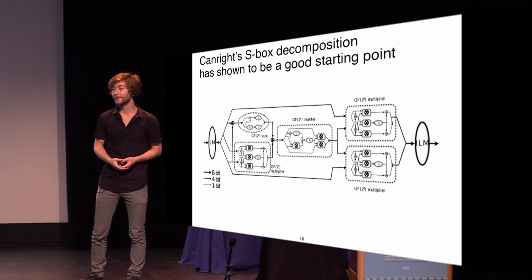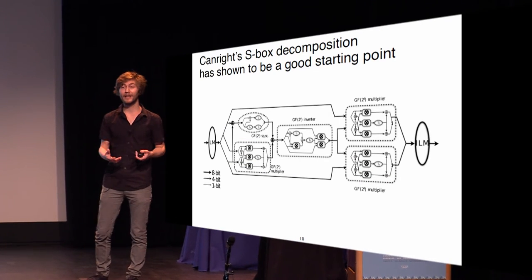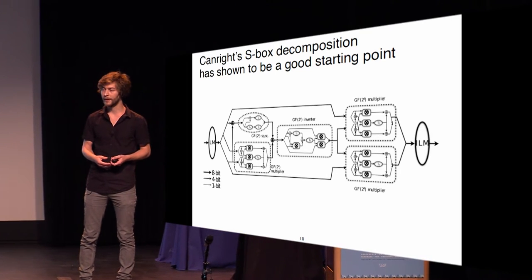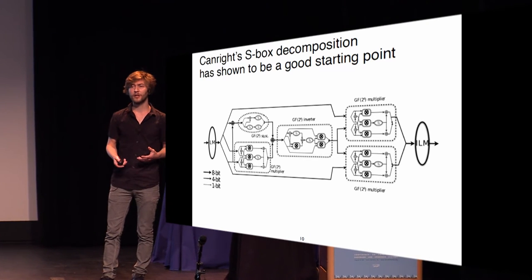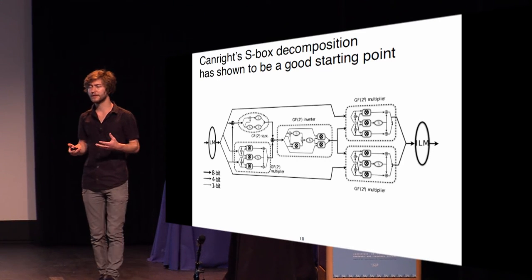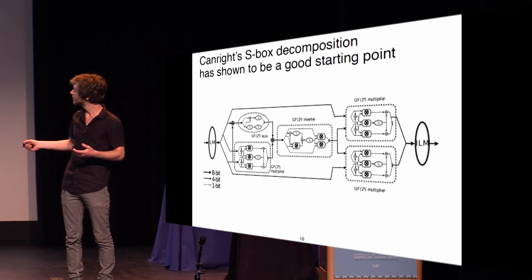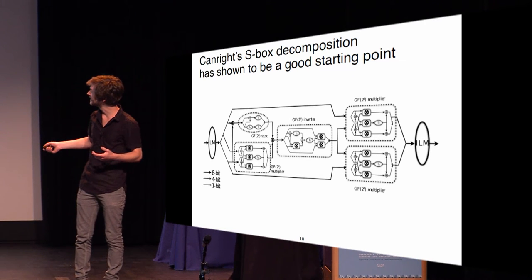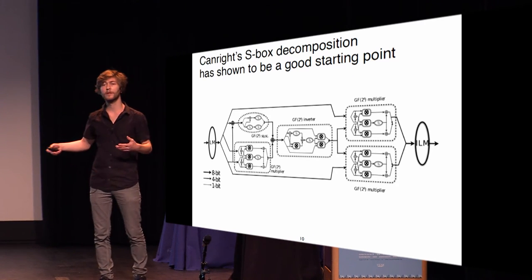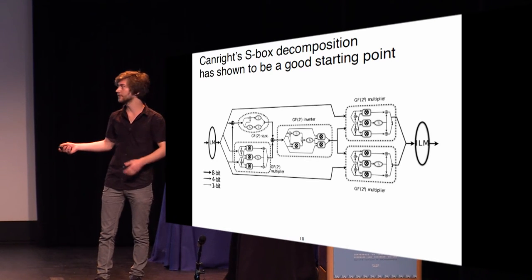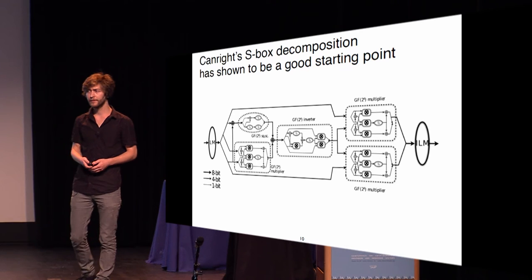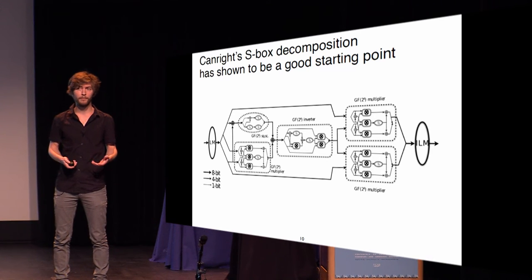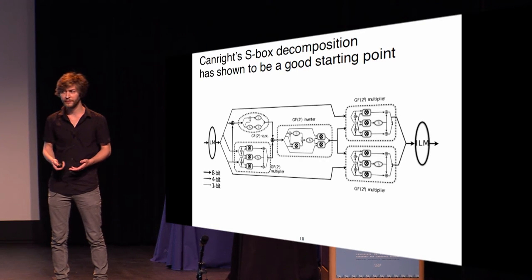In most implementations the Canright S-box has been shown to be a good starting point. Previous work has shown that based on how we implement the subcomponents — whether we take them together in the Galois Field 16 inverter or mask the subfield functions in Galois Field 4 — we get more efficient and more compact implementations. That leaves us with a choice we need to justify.